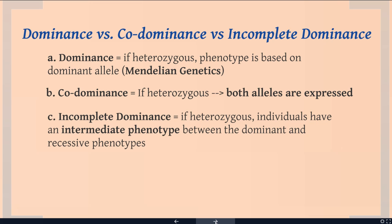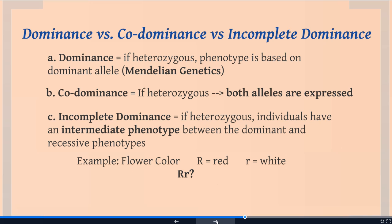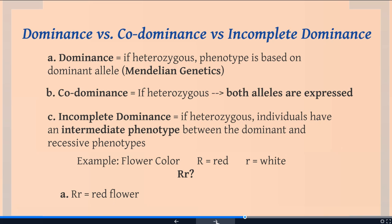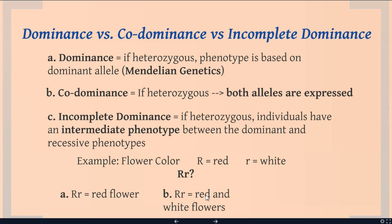In incomplete dominance, the heterozygous individuals will have an intermediate phenotype that is halfway between the dominant and the recessive phenotype. For example, where big R means red and little r means white: if you are RR you are red, if you are rr you are white. If you are Rr with a dominant recessive relationship, you would be red. With co-dominance, you would actually end up with a flower that is both red and white — maybe with stripes or spots — and you would see both alleles expressed equally.